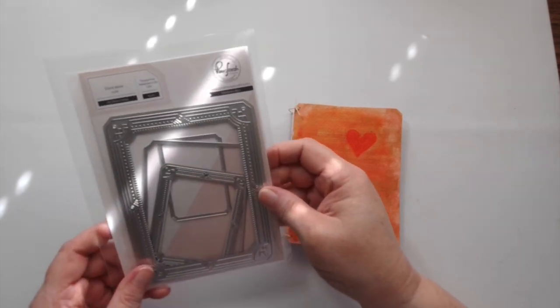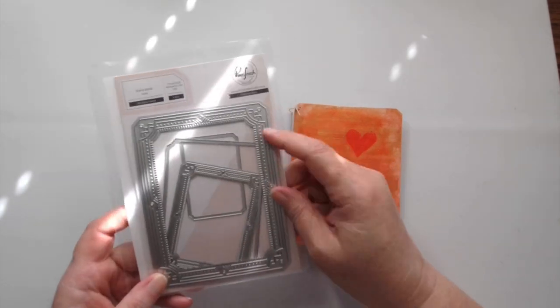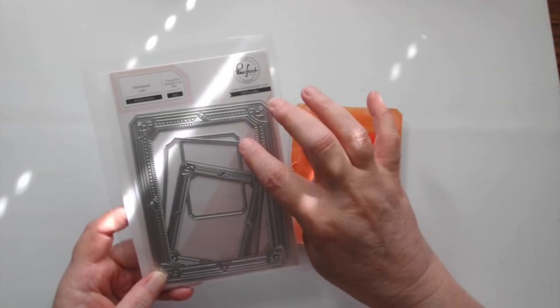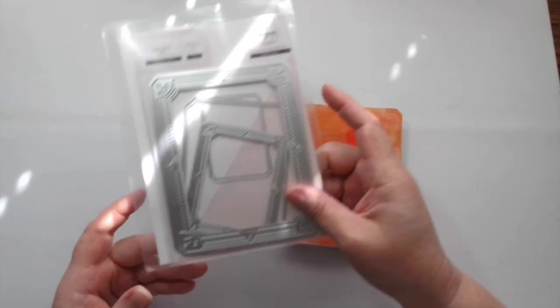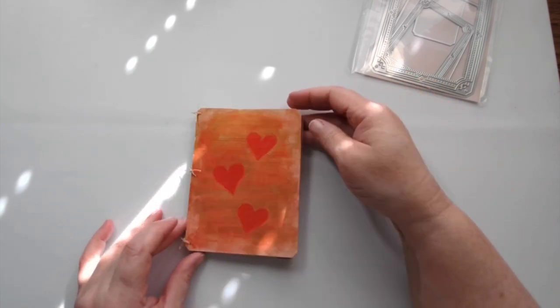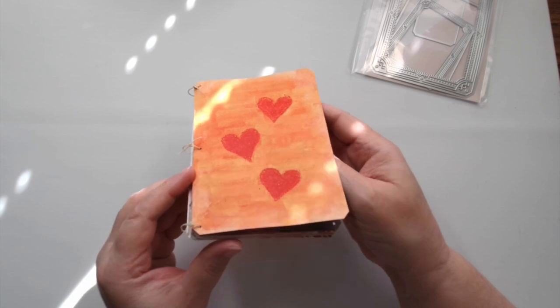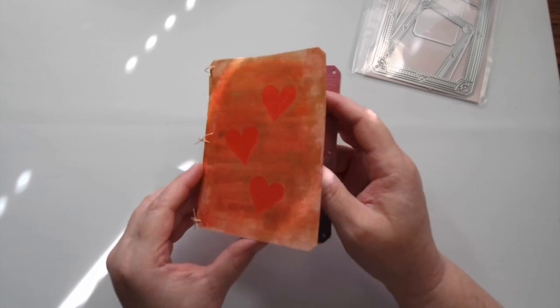All great channels. So I used a die meant for an A2 card that cuts out a frame. It's got a separate piece that cuts out the center. I didn't use that. On the cover, I did a little bit of wax resist, and I do have a process note about that, a tip I wanted to share.